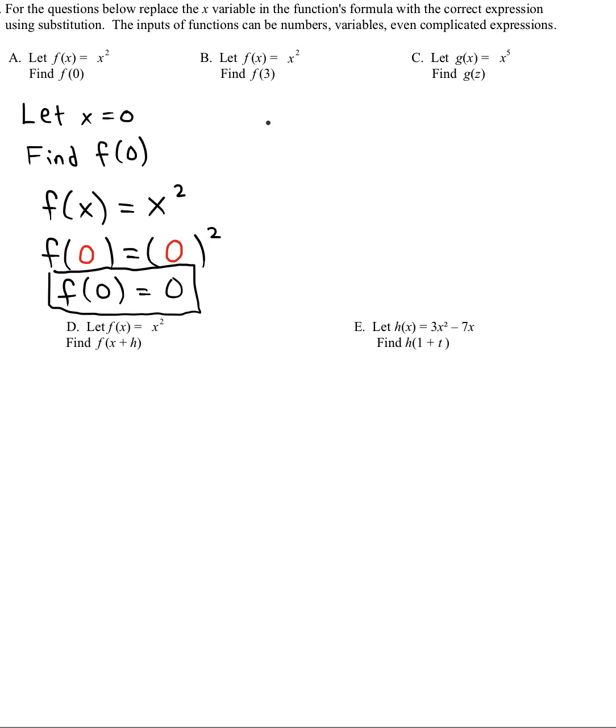The next one's similar, it uses the same rule of f of x equals x squared. But this time, we're going to let x equal three. So find f of three. I'll rewrite the rule, but I'll leave the x's as open parentheses so that I have room now to substitute in that three. And our final answer here is going to be f of three is nine.